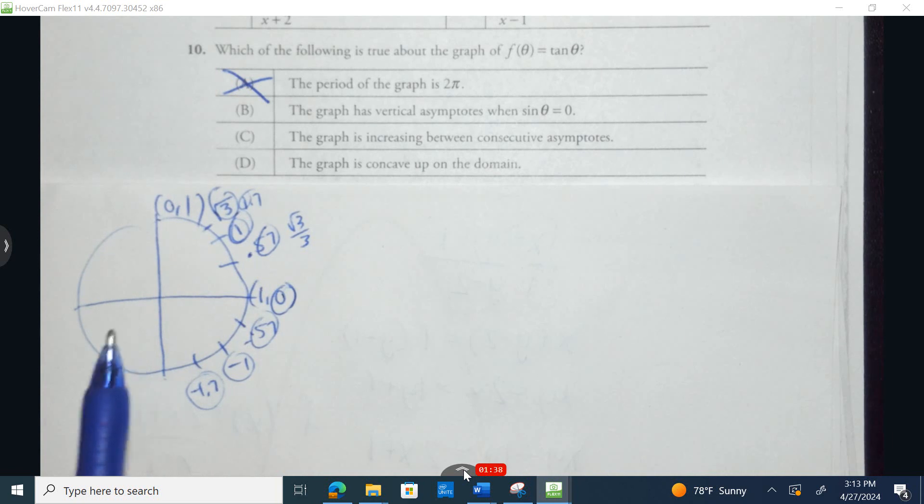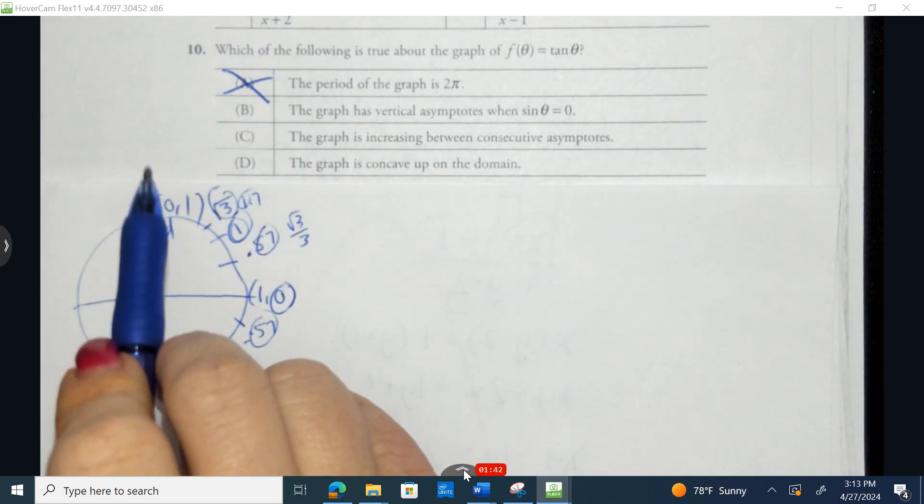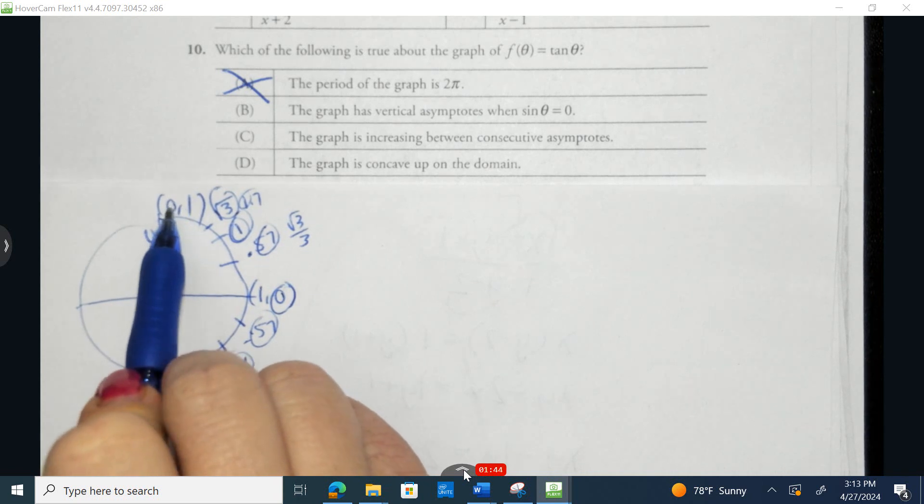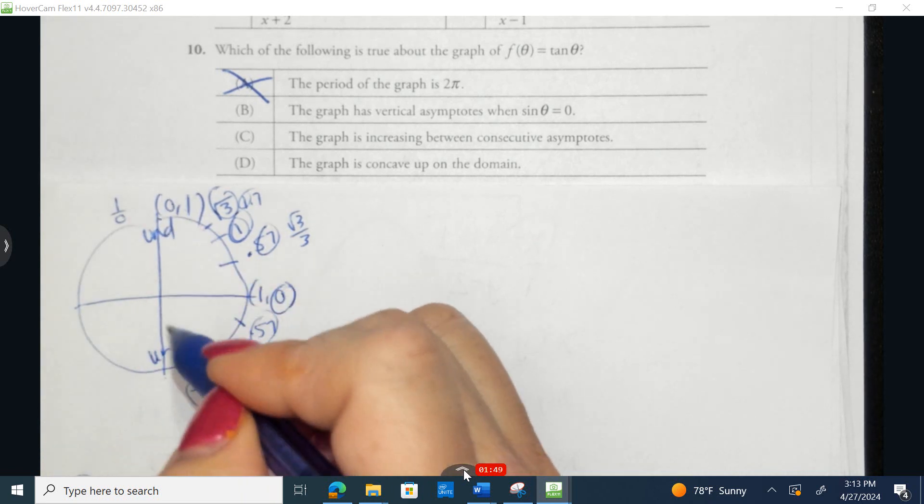Now, how do I know it's undefined at these locations? Because tangent is the same as sine divided by cosine, and 1 divided by 0, you can never have 0 on the bottom of a fraction.